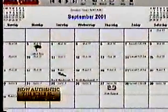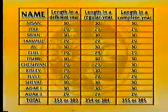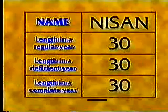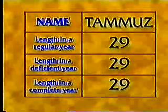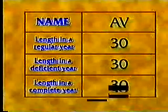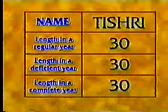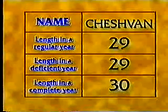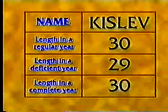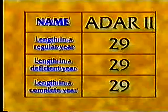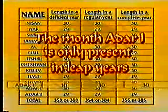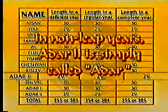The months and their lengths are: Nisan, Iyar, Sivan, Tammuz, Av, Elul, Tishri, Cheshvan, Kislev, Tevet, Shevat, Adar-1, and Adar-2. The month Adar-1 is only present in leap years. In non-leap years, Adar-2 is simply called Adar.